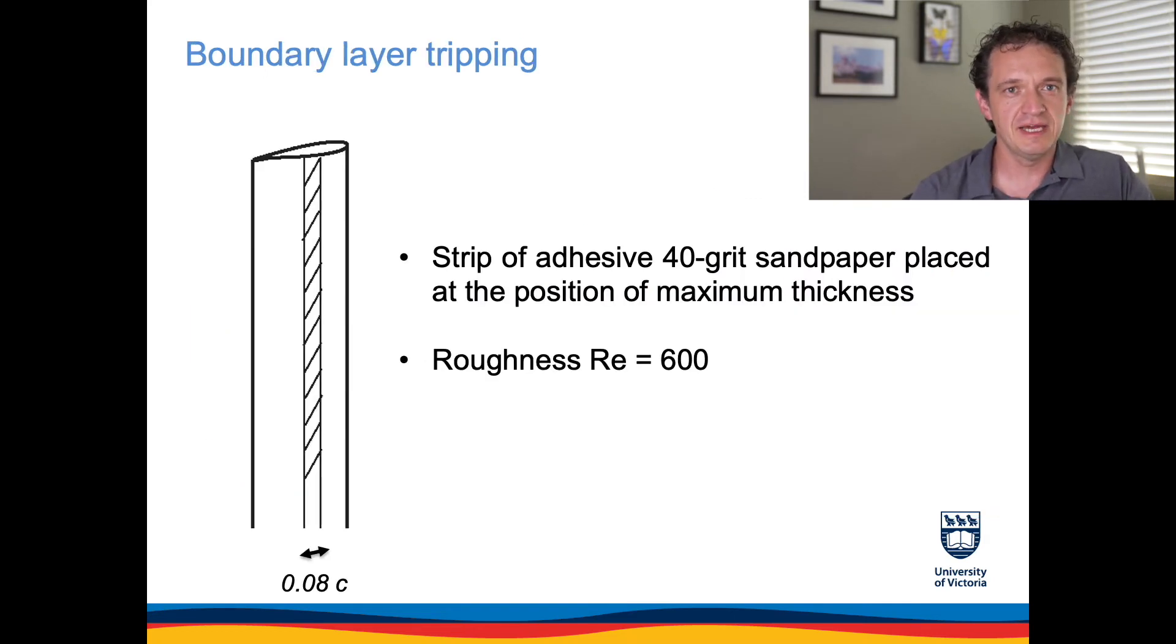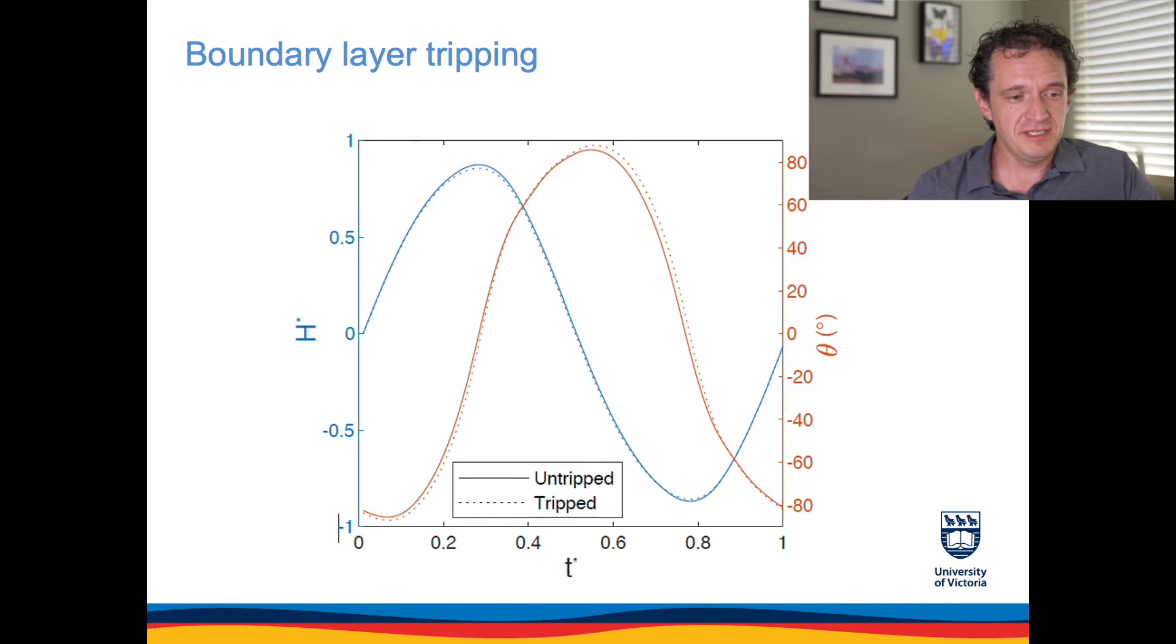We also looked at the response to tripping the boundary layer on the passive foil itself. We applied sandpaper, a strip of sandpaper along the span of the foil and effectively accelerated transition of the boundary layer into a turbulent regime. In our previous studies we found that the leading edge vortices are primarily responsible both for generation of the lift and the reversal of the pitch and heave motion. The timing of shedding of those leading edge vortices is crucial, so we were wondering what the effect of the tripping of the boundary layers would be and we can see here in terms of the amplitudes of the heave and pitch as a function of time over the oscillation period the effect was minimal.